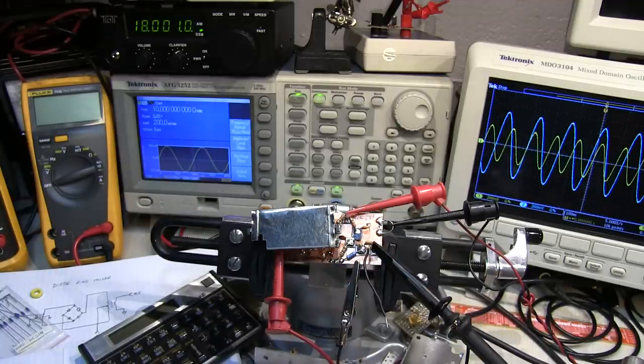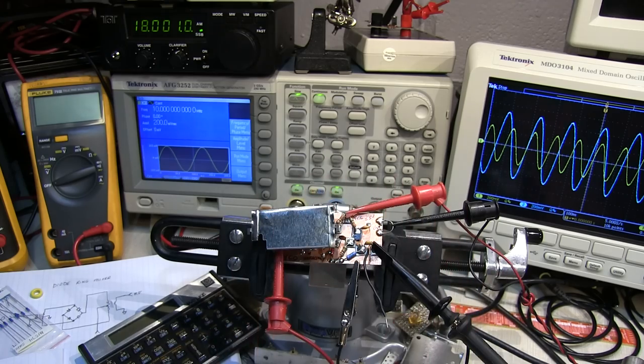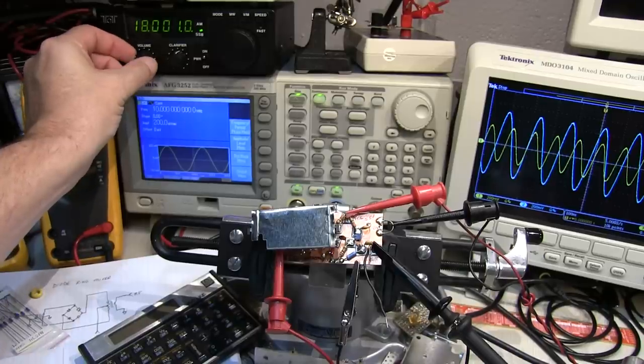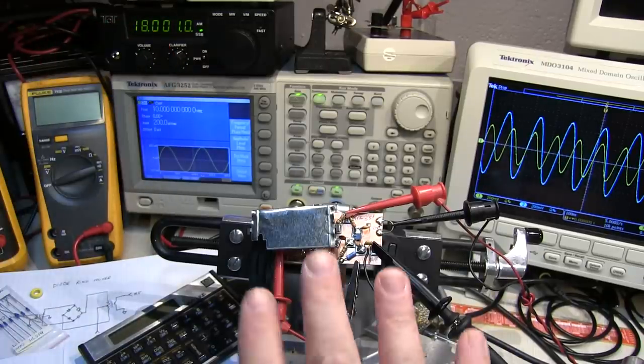but let's take a look at how effective that is in reducing the effect of just moving my hand around it. So let's turn the volume back up on the receiver. And now if I wave my hand around this,